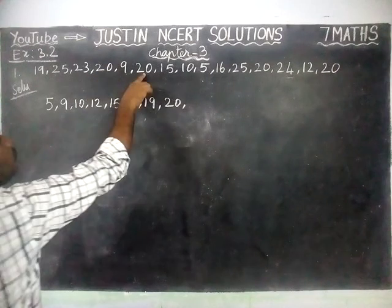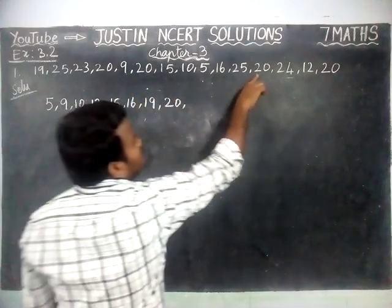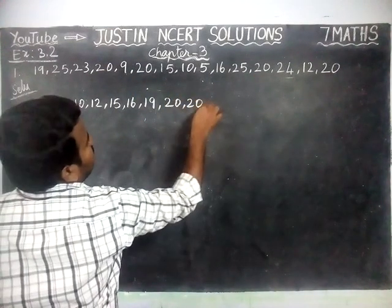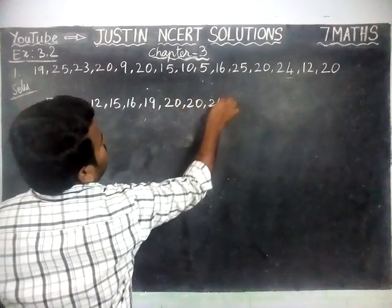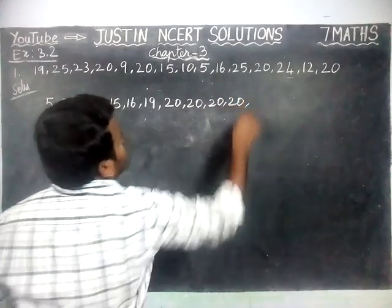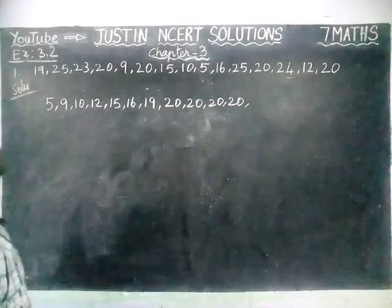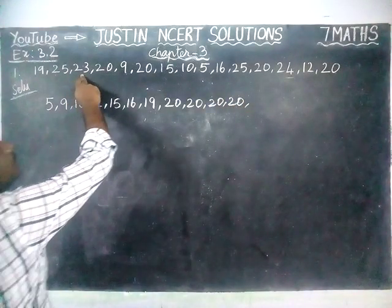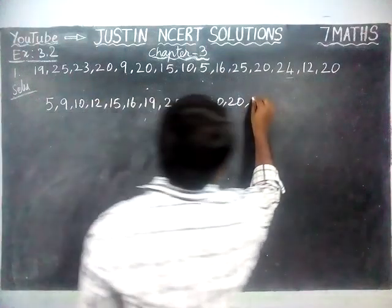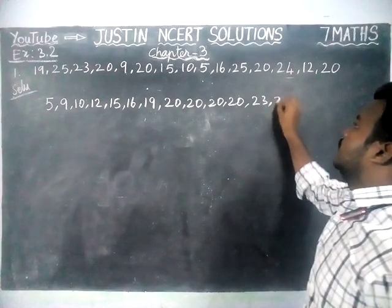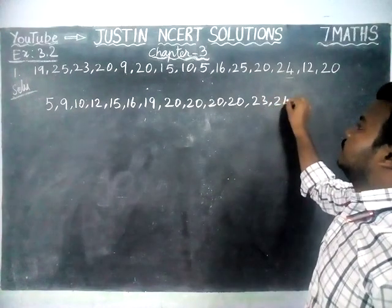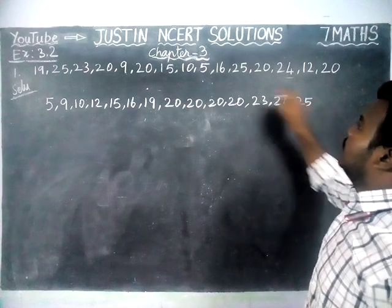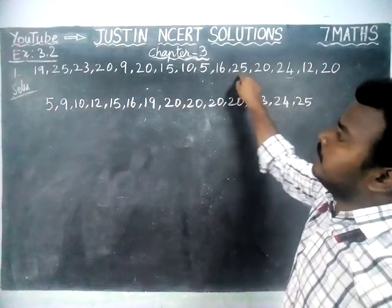Then 20 — we have 1, 2, 3 and 4 twenties, so 20, 20, 20, 20. Next number is 23, then 24 and 25. We have 2 twenty-fives. So the ascending order is complete with 15 values.